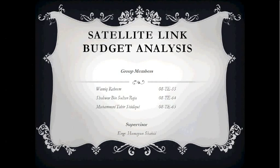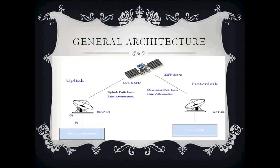Coming toward the general architecture of link budget analysis, we have a satellite in space and two links — uplink and downlink — from the earth and satellite station. We consider gain over noise temperature, path losses, and rain attenuation.